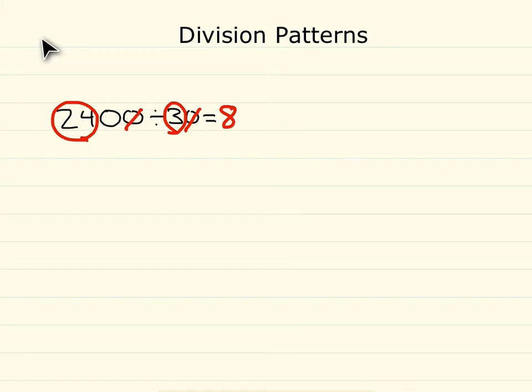After crossing off your zeros, you notice you have one zero left, and that zero needs to go on the end of your quotient. So therefore, your quotient is 80. So 2400 divided by 30 equals 80.